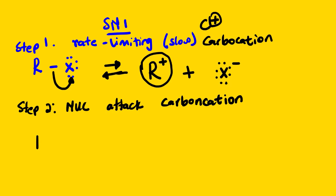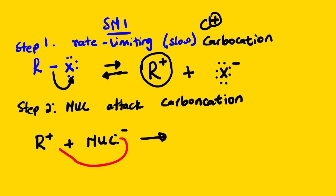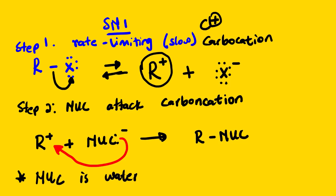The nucleophile reacts with and attacks the carbocation to form our product. Remember, if we have three steps, it is when the nucleophile is water or an alcohol — in that case we will have a step number three. We will explain this in detail by looking at an example.